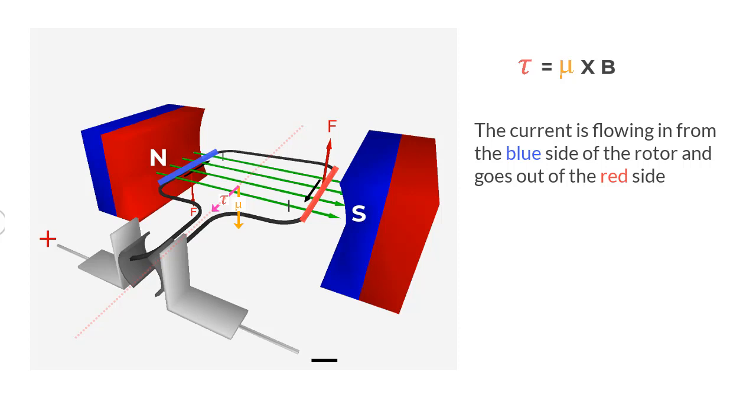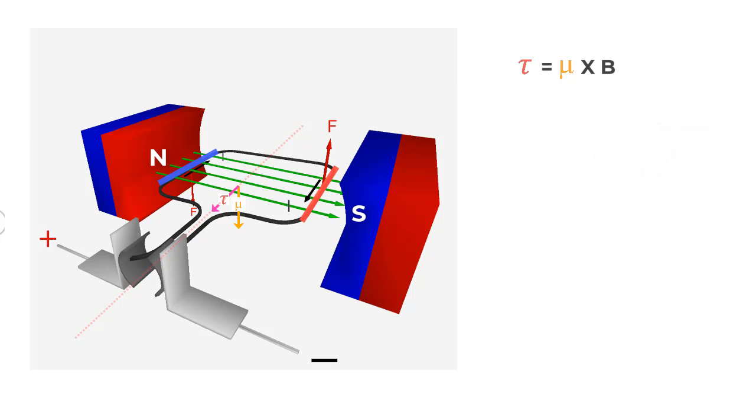Because of the commutator, this reversal of direction of current happens every 180 degrees of rotation of the loop, which in turn helps to maintain the direction of the torque, and therefore the continued motion of the loop in anti-clockwise direction.